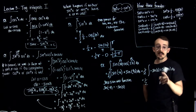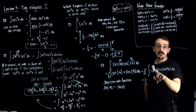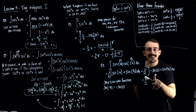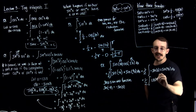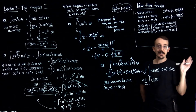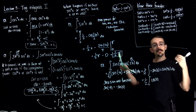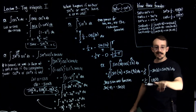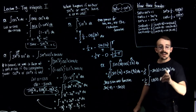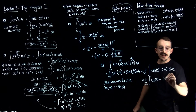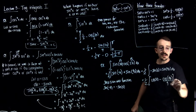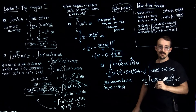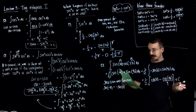So we have one half times the integral of negative sine x plus sine 9x dx. Integrating each separately: the integral of negative sine x is cosine x — since the integral of sine is negative cosine, and the negative sign out front makes it positive cosine x. The integral of sine 9x is negative cosine 9x over nine, since chain rule would produce a factor of nine. So the final answer is one half times cosine x minus cosine 9x over nine, plus c.